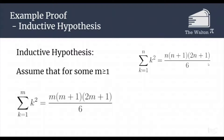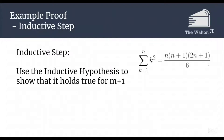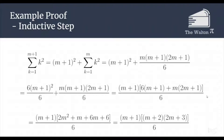We will then use this inductive hypothesis when we are trying to prove our inductive step, which is where we try and show that it is true for m plus 1. If we plug in m plus 1 for n, we get the sum from k equals 1 to m plus 1 of k squared. We can pull out the m plus 1 term, so that is an m plus 1 squared, and we are left with the sum from k equals 1 to m of k squared.